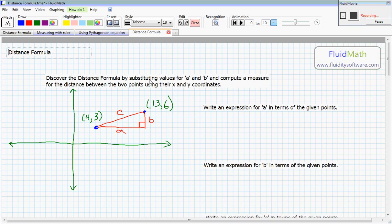And what we're going to do is just follow along these steps. We want to discover the distance formula by substituting values for a and b, and compute a measure for the distance between the two points using their x, y coordinates. So step one, what does that mean? Let's start with this first step. Write an equation for a in terms of the given points.